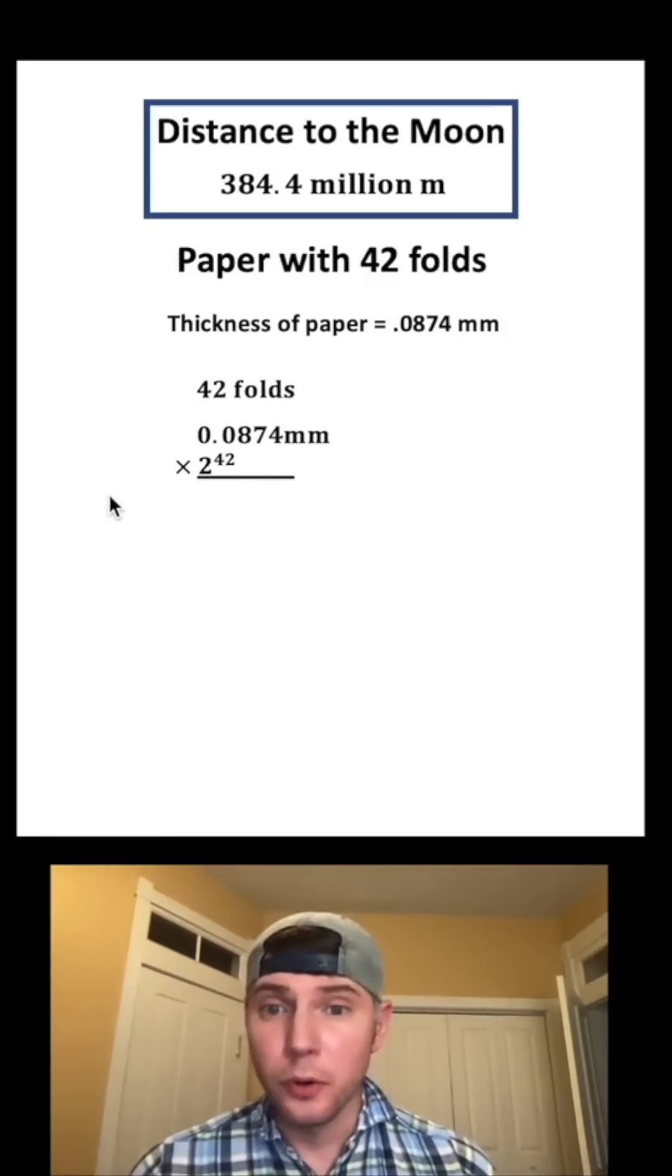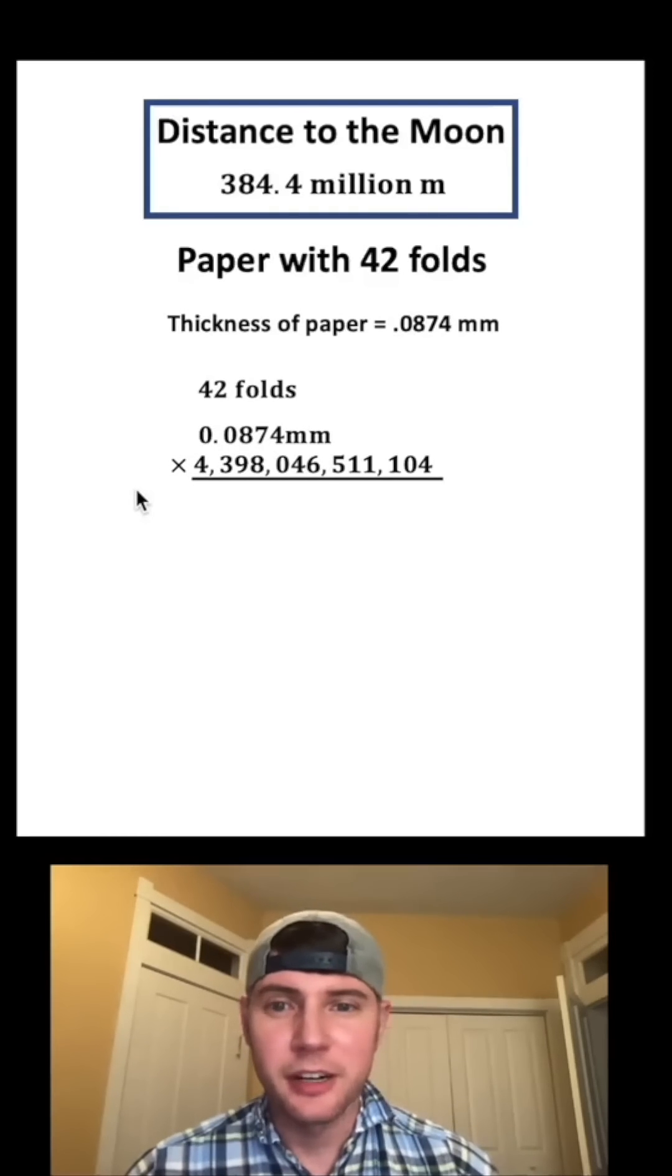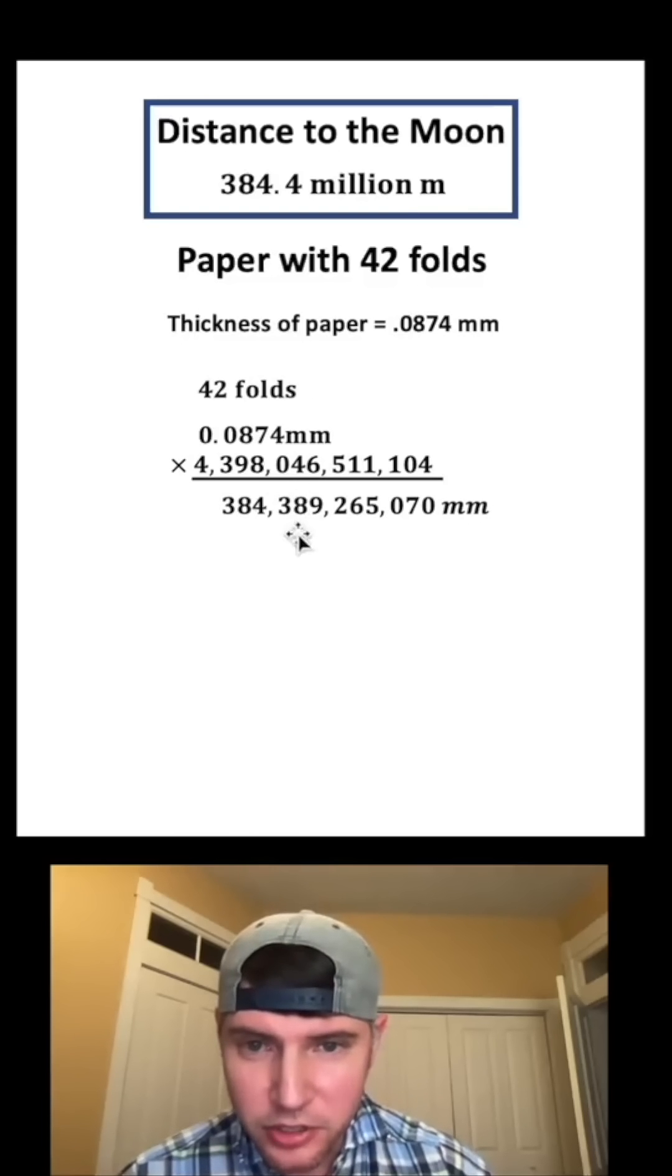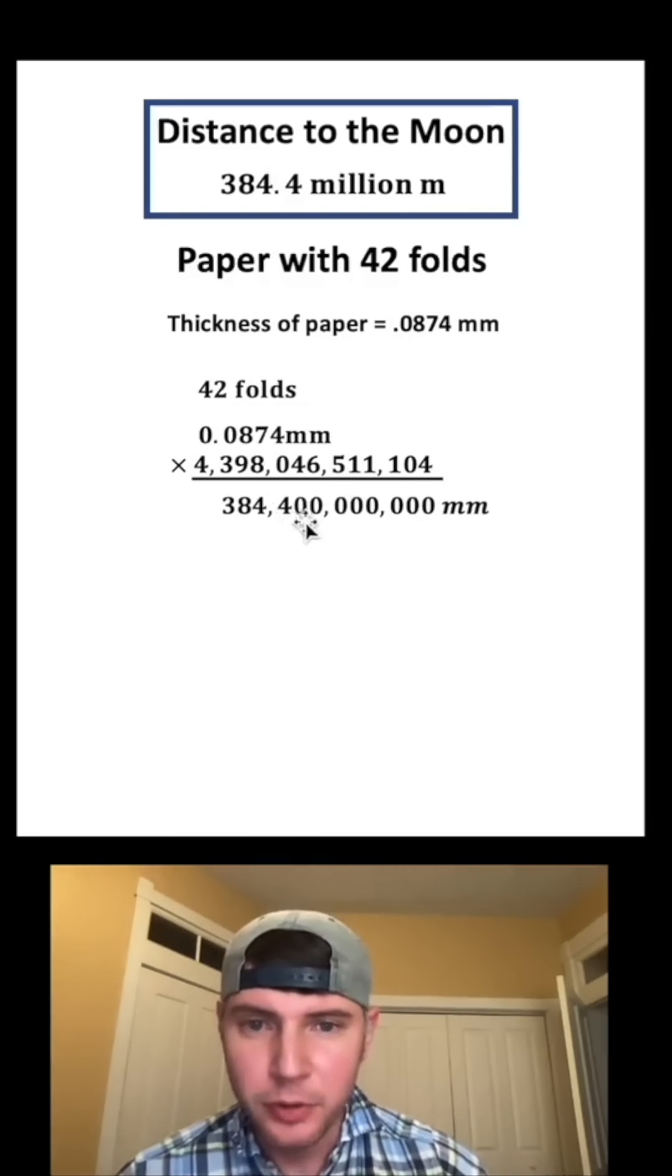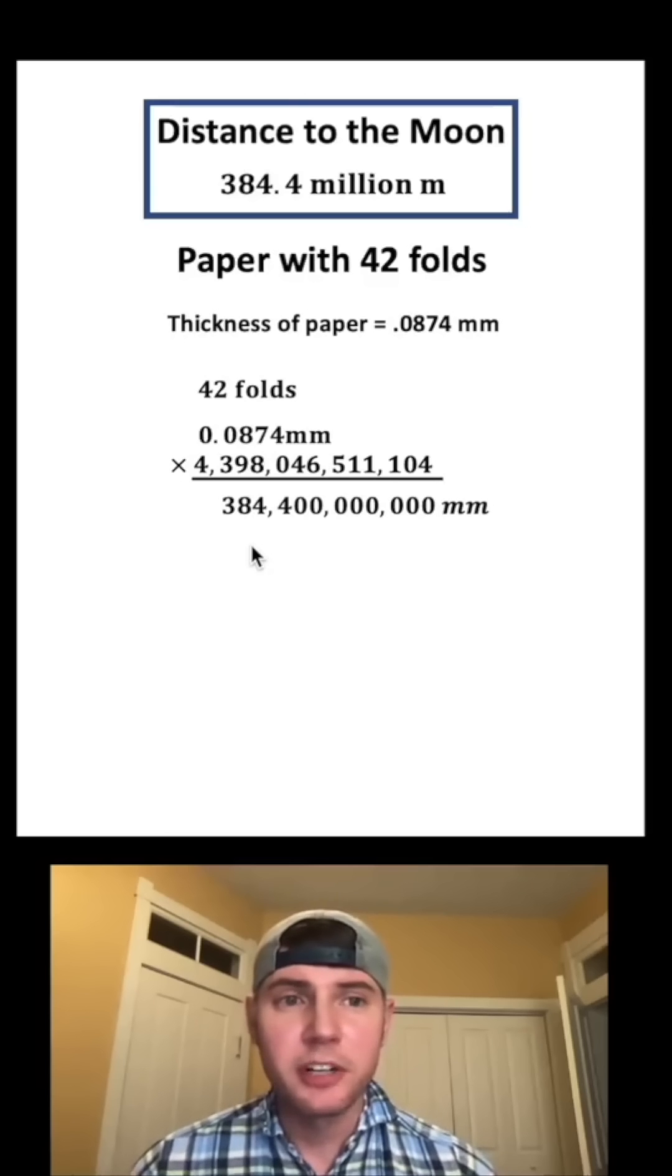Now if we had 42 folds, that'd be multiplied by 2 to the 42nd power. It's this very large number right here. After we multiply these, we get this other very large number. So I'm gonna cut it at four figures, so this 3 will round up to a 4, and the rest of this stuff is just gonna be zeros. So now we have 384,400,000,000 millimeters.